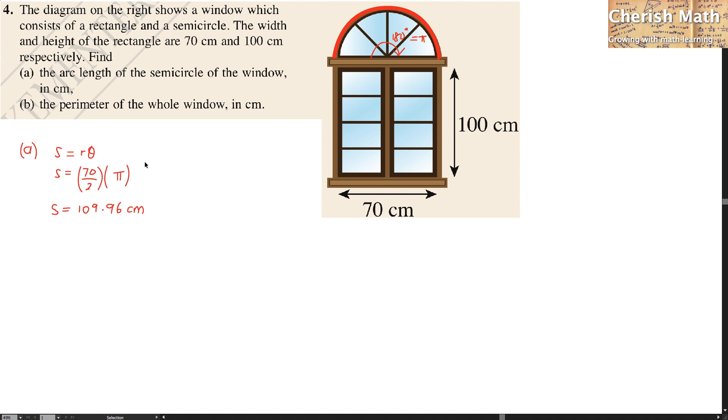Now for part B, I need to find what is the perimeter of this whole window. That is by using 109.96 plus 100 plus 70 plus 100. The answer I am getting here is 379.96 cm.